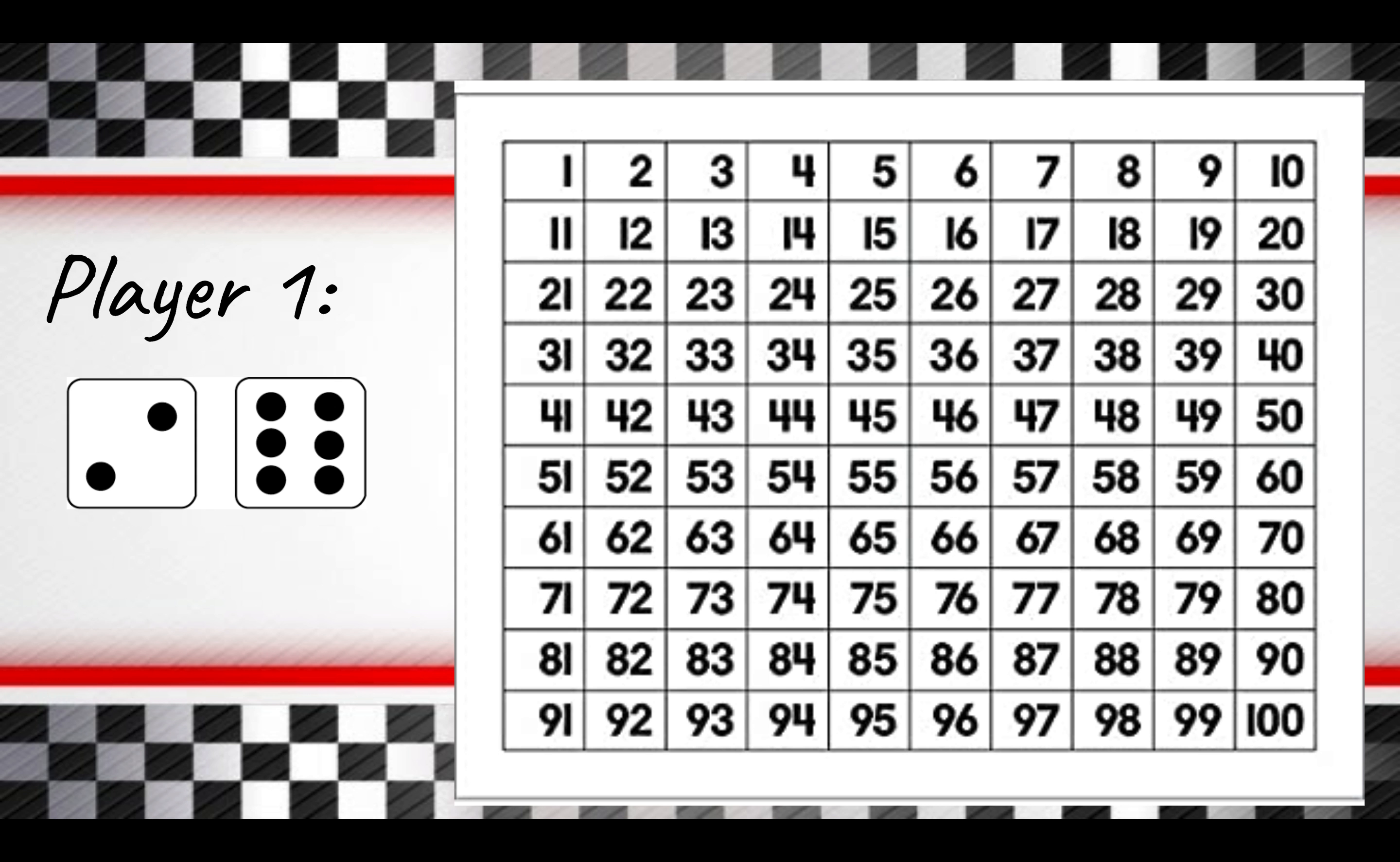So let's pretend player one rolls a two and a six. How many dots do you see all together? Two and six make eight. Player one will get to move their game piece eight spaces.